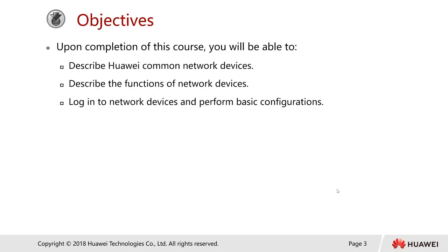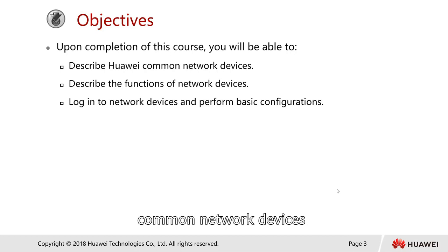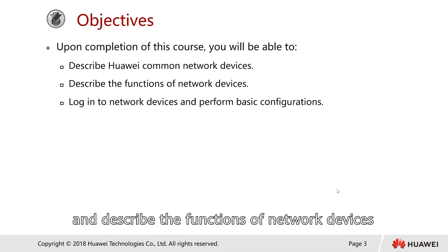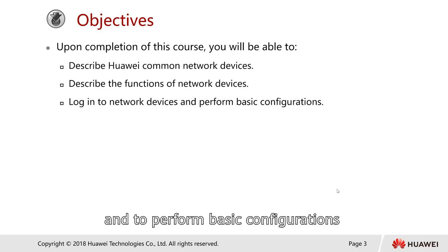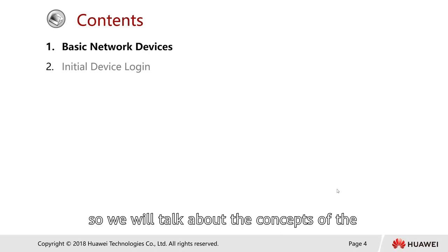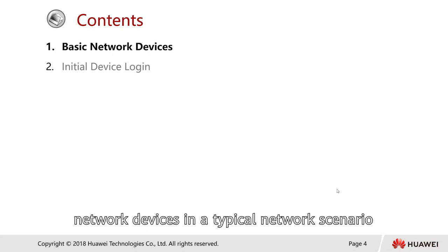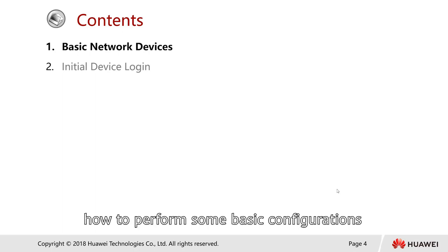Let's look at the objectives. Upon completing this course, we should be able to describe Huawei's Common Network Devices, describe the function of the network devices, learn how to log into network devices, and perform the basic configurations. This module has two contents: first, the basic network devices — we talk about the concepts of the network devices in a typical network scenario — and then we talk about the initial device login, IP addresses, and how to perform some basic configurations.